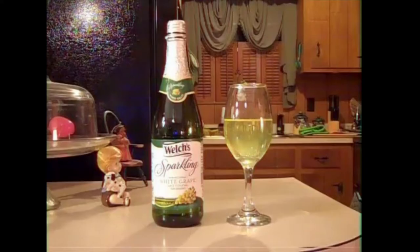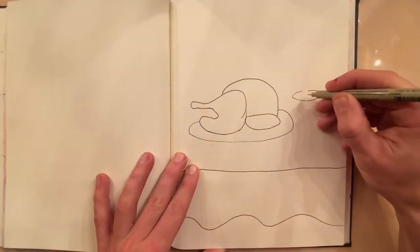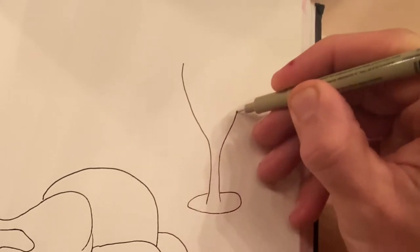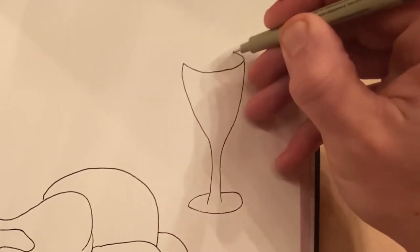The next object on our table is going to be a glass of sparkling grape juice. This is a great form to practice cylinders and a bit of a sphere at the top of the glass as well. So take your time, draw a nice symmetrical trumpet shape.